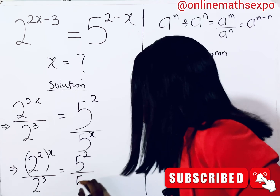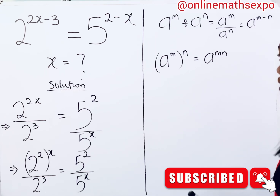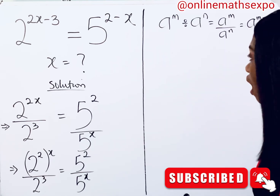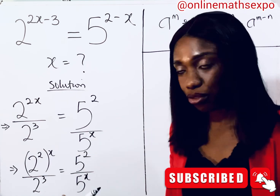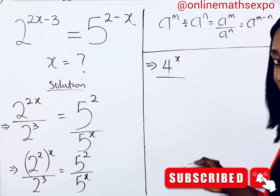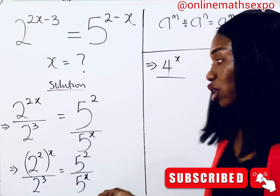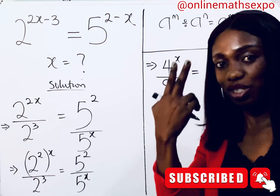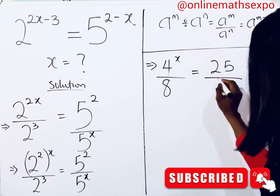Now we simplify. 2 to the power of 2 is 2 multiplied two times, giving us 4, so the numerator becomes 4 to the power of x. Then 2 to the power of 3 gives us 8. On the right side, 5 to the power of 2 gives us 25, all over 5 to the power of x.